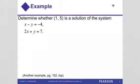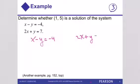Note slide number three. This is an example. Determine whether (1, 5) is a solution of the system. So to do that, we take each equation: x minus y equals negative 4, and 2x plus y equals 7. We know that the point is (1, 5), and we also know that this is x, y.